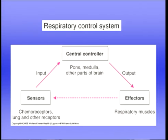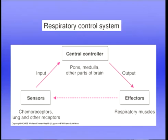These sensors send input to the central controller in the brain. The central controller is mainly located in the brain stem — the medulla and the pons — but there are also influences from other parts of the brain. That's where information from the sensors is processed, and the brain works out what the body really wants in terms of gas exchange.